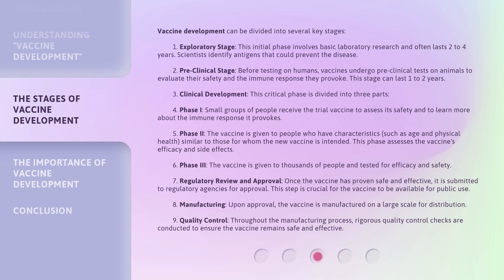Stage 8: Manufacturing. Upon approval, the vaccine is manufactured on a large scale for distribution. Stage 9: Quality control. Throughout the manufacturing process, rigorous quality control checks are conducted to ensure the vaccine remains safe and effective.